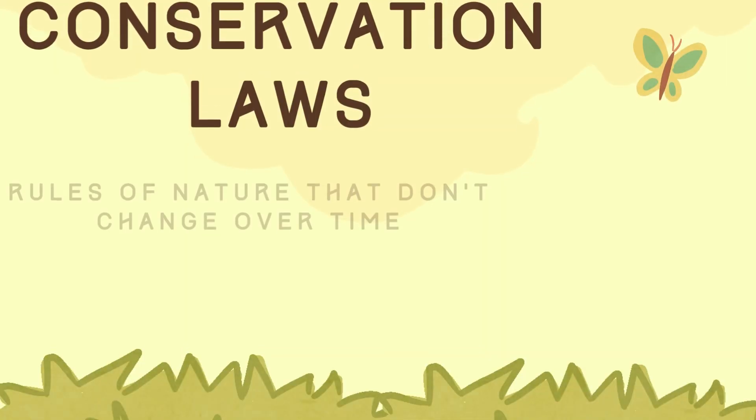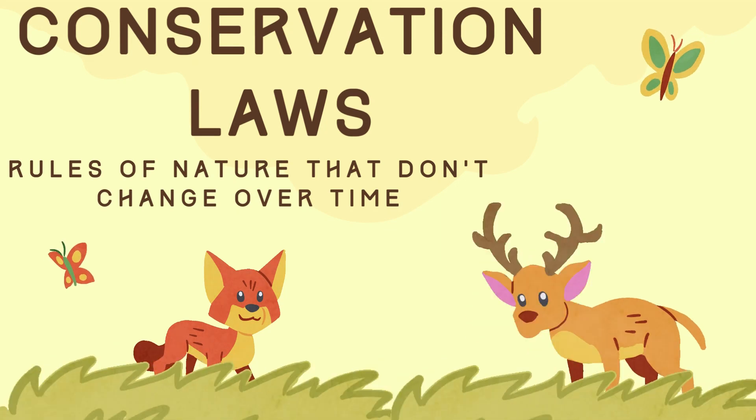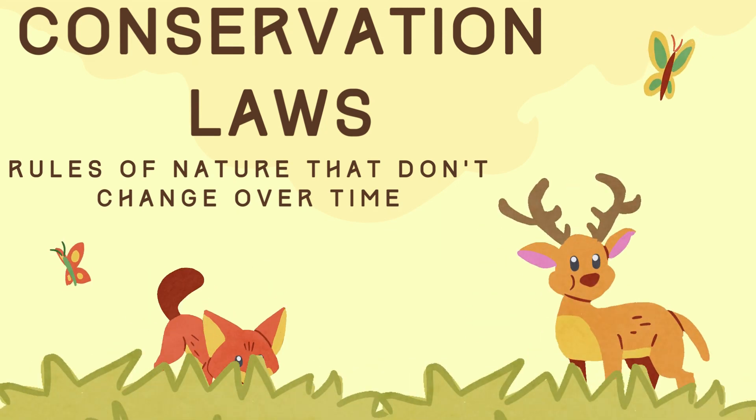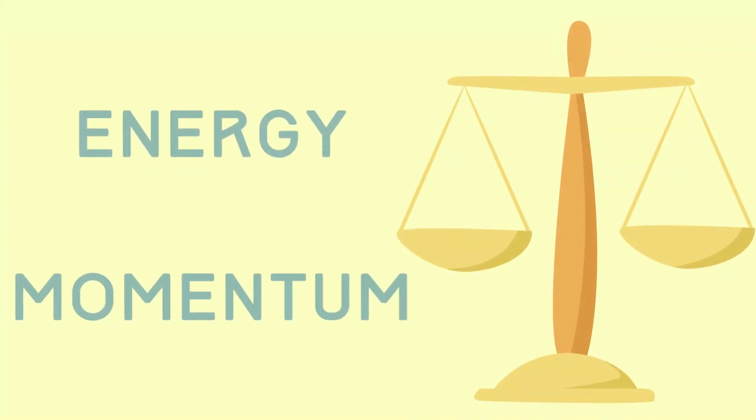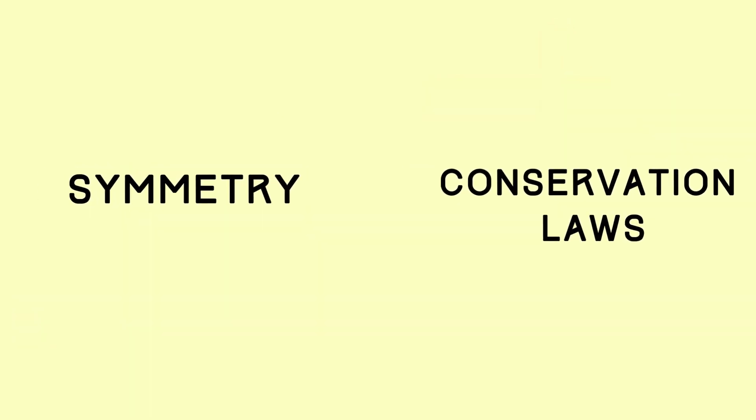Conservation laws can be referred to like rules of nature. They are quantities that can't be changed overall over time. For example, energy and momentum. They must be followed in order for things to be kept in balance.